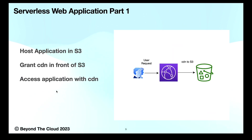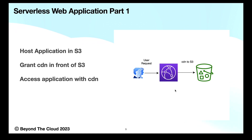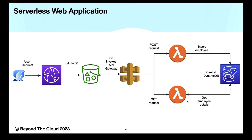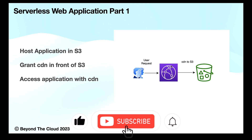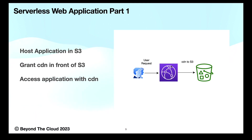Next is part one. In today's video we will be spinning up one S3 bucket, uploading our website there, and then spinning up one CloudFront distribution in front of S3 and accessing our website through the CloudFront distribution. In the next video we will spin up a couple of Lambdas and DynamoDB for our backend, and in the last video we will spin up API Gateway and test the overall application. So let's go and host our website in an S3 bucket and access it through CloudFront distribution.